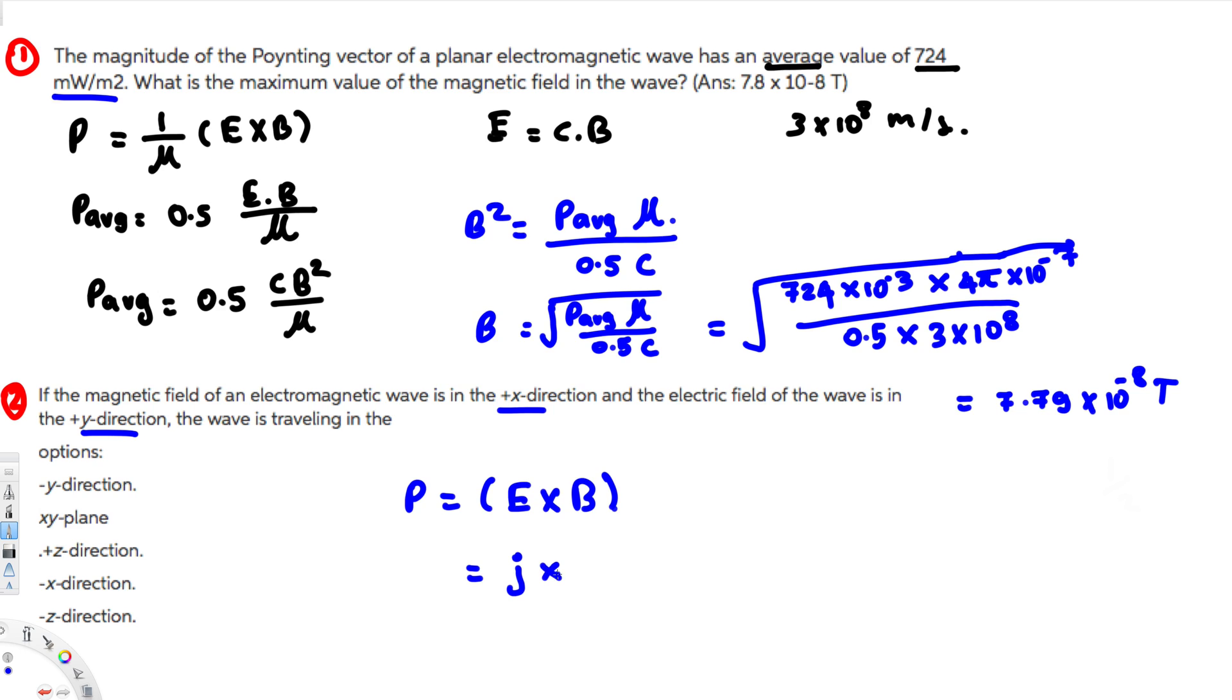B magnetic field is in the plus x direction. Plus x means i hat direction. So if you cross j with i, what will it be? So here we have i, j, k, right? And if you cross j cross i, that will give you a negative k. So here we are going to have negative z direction.